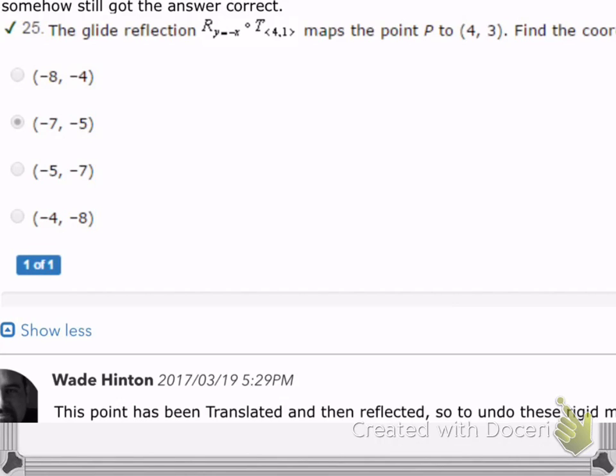So this is the end destination. This point (4, 3) is the end destination of mapping this point using these two transformations. They want us to find the coordinates of P. In other words, where did we start?